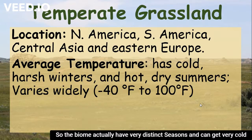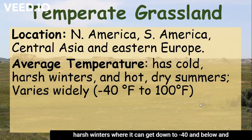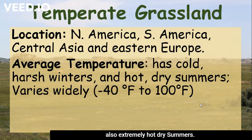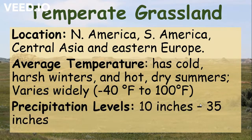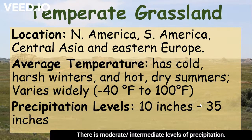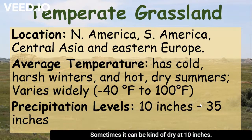Temperate grasslands have very distinct seasons — very cold, harsh winters where it can get down to negative 40 and below, and also extremely hot, dry summers, so it can vary pretty widely throughout the year. They get moderate, intermediate levels of precipitation. Sometimes it can be kind of dry at 10 inches, and some areas may receive more rain at 35 inches.